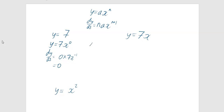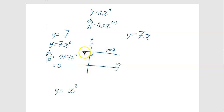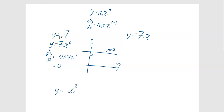Graphically, y equals 7 is just a horizontal line. The gradient anywhere on this line is 0, and we found that differentiating y equals 7 gives 0. So the most important thing about differentiating: dy by dx gives you a rate of change, but it is also a gradient function — it gives you a function which allows you to find the gradient at any point.